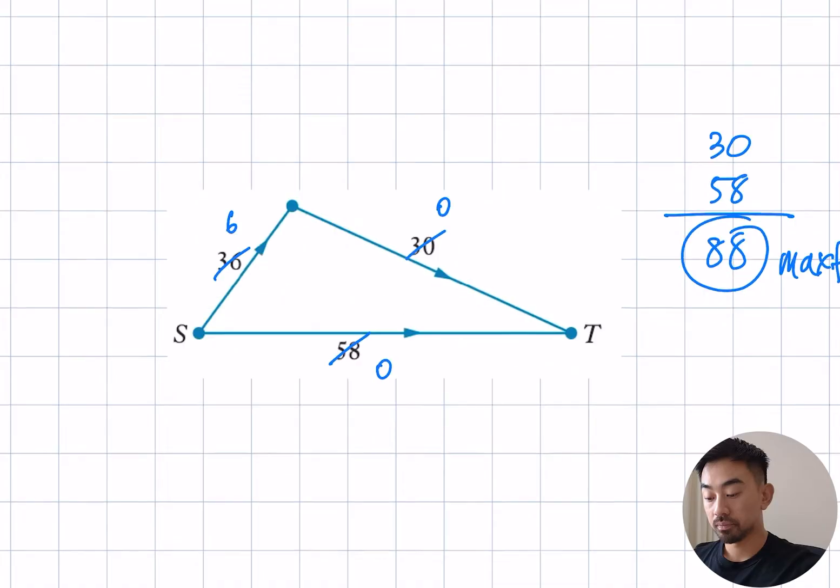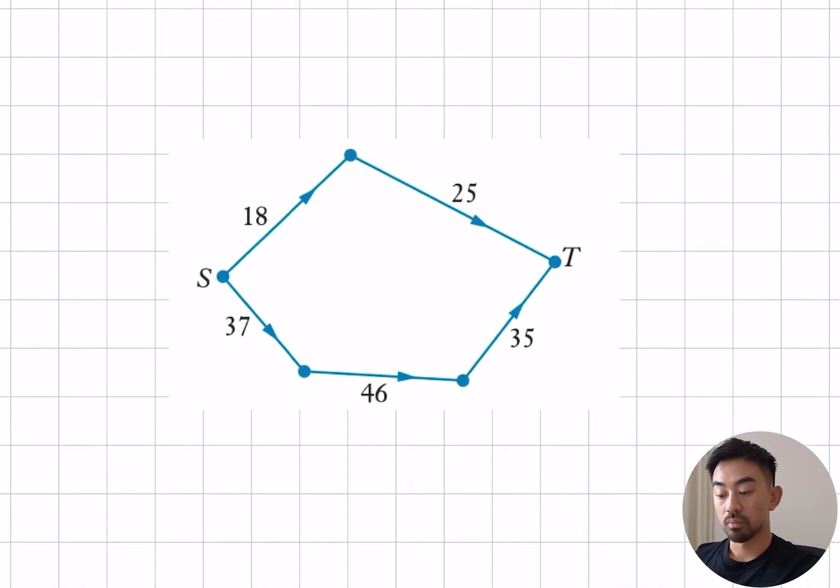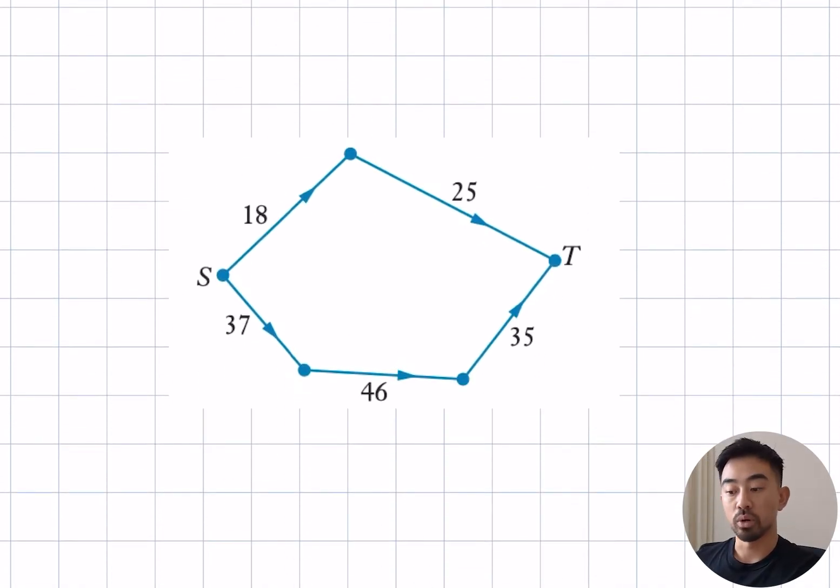Let's look at a slightly harder example. Once again we want to start from s and get to t. I want to go any route that gets me there and choose the smallest number to subtract. For example going up and down, clearly the smallest number here is 8. So I subtract 8 from both these edges which gives 0 and 7.